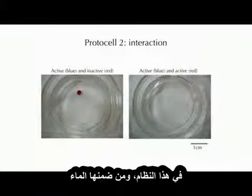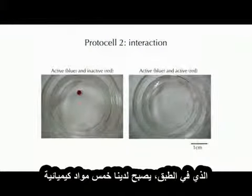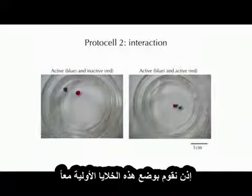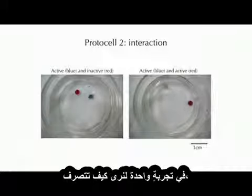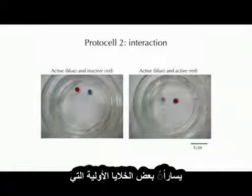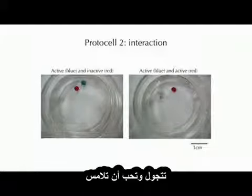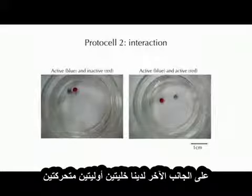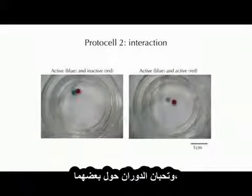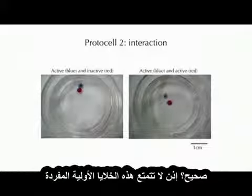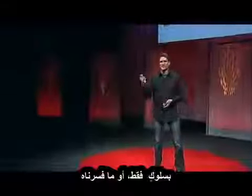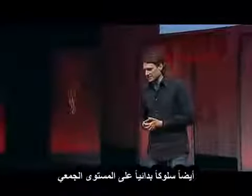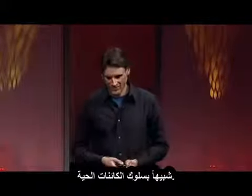If we count the number of chemicals in that system, including the water in the dish, we have five chemicals that can do this. Then we put these protocells together in a single experiment to see what they would do. Depending on the conditions, some protocells on the left move around and touch other structures in their environment. On the other hand, two moving protocells like to circle each other and form a kind of complex dance. So not only do individual protocells have behavior, but we also have population-level behavior similar to what organisms have.